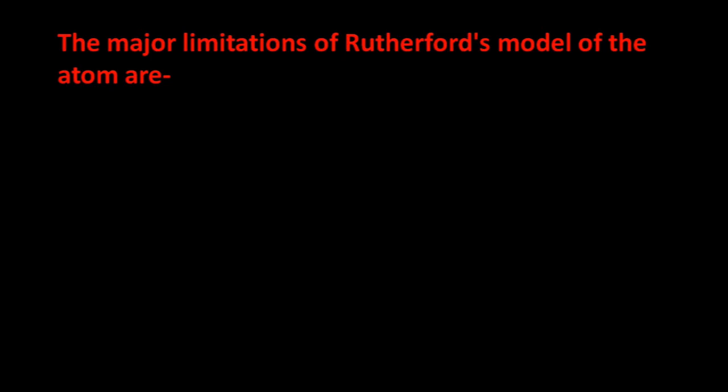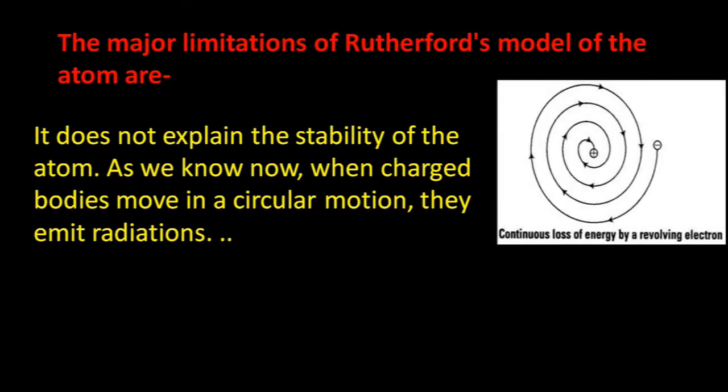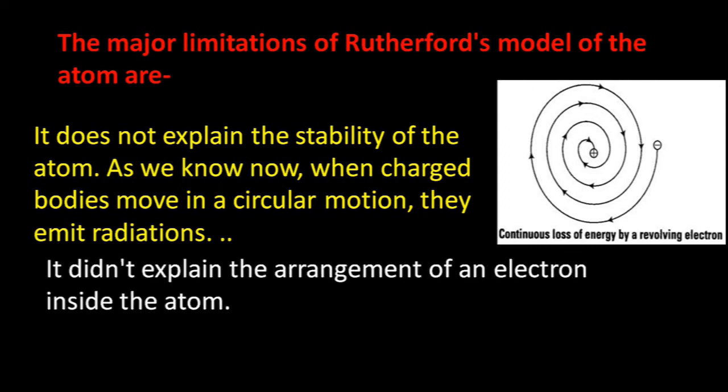The major limitations of Rutherford's model of the atom are: It does not explain the stability of the atom. As we know, when charged bodies move in circular motion, they emit radiation and lose energy. Due to continuous loss of energy by revolving electrons, they may collide with the nucleus or collapse into it. It did not explain the arrangement of electrons inside the atom.